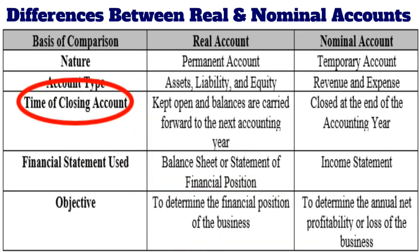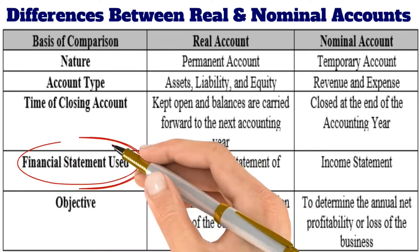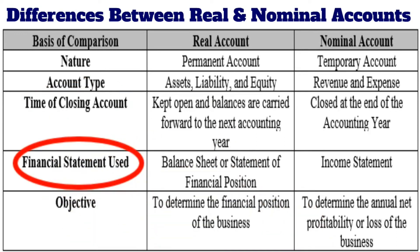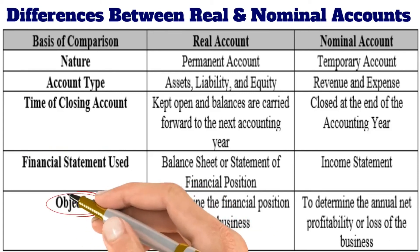Regarding the time of closing: real accounts are kept open and balances are carried forward to the next accounting year, whereas nominal accounts are closed at the end of each accounting year. In terms of financial statement use, real accounts are used in the balance sheet or statement of financial position — they are called balance sheet items — whereas nominal accounts are used in the income statement and are called income statement items.